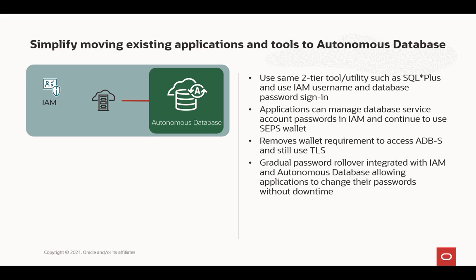A new feature that comes along with this removes the wallet requirement to access ADBS when you're using one-way TLS. Additionally, IAM integration with Autonomous Database allows for gradual password rollover, so you can change your application password in IAM without having to take downtime for your application.